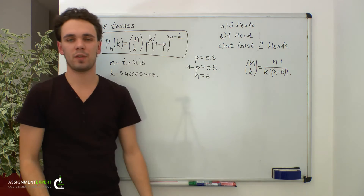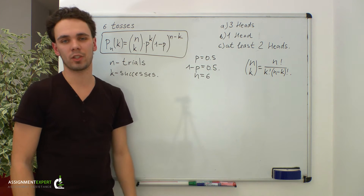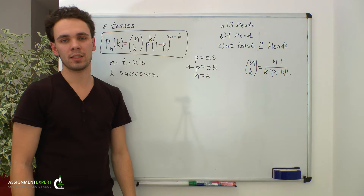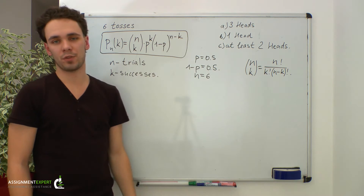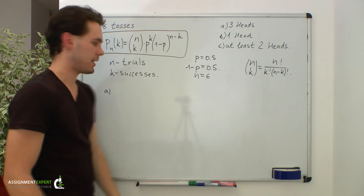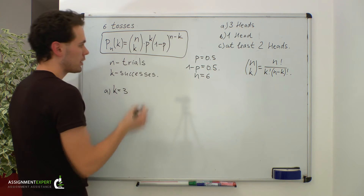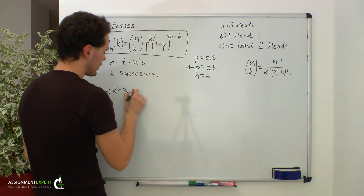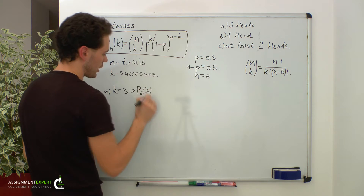Now let's consider case A. Here we need to find the probability of getting three heads in six tosses of the coin. Success is getting head in one toss of the coin, so three heads means three successes and k is equal to 3.